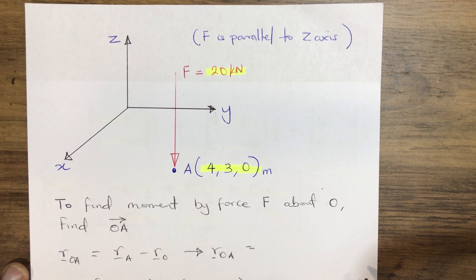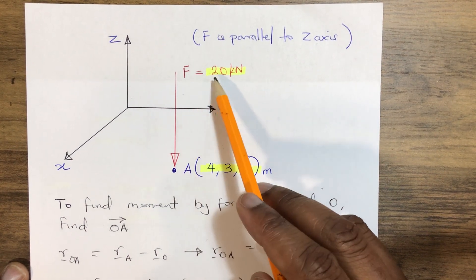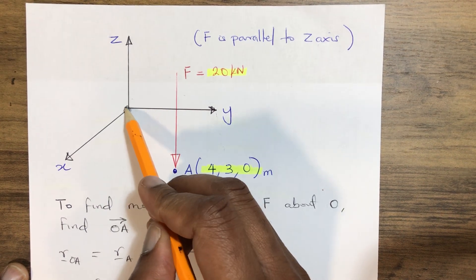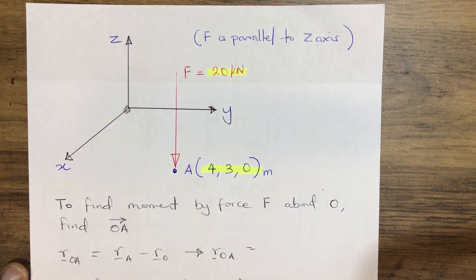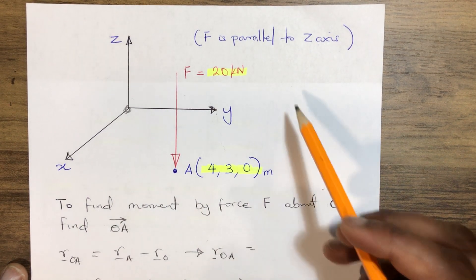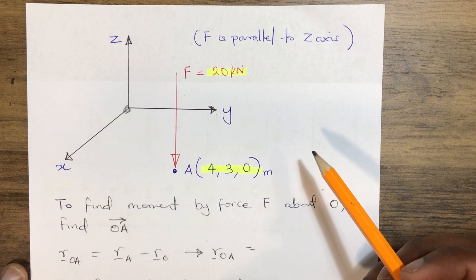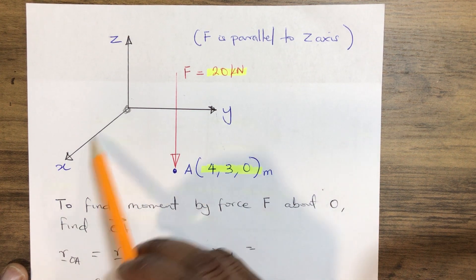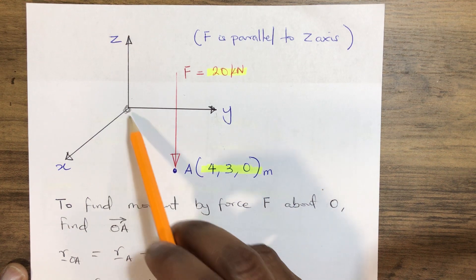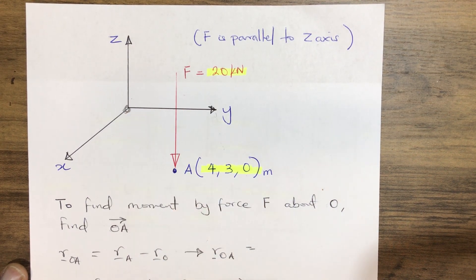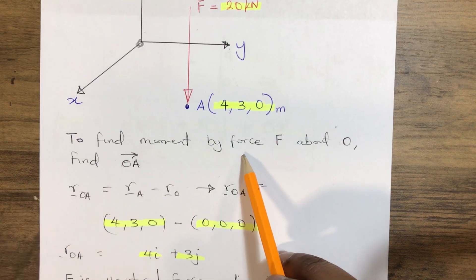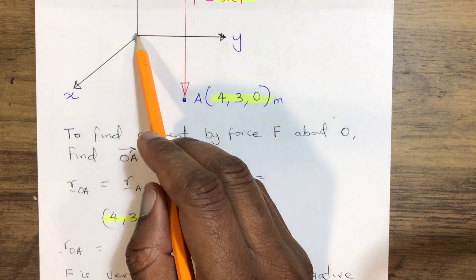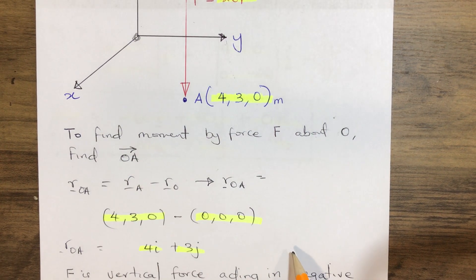We are asked to find the moment created by force F, which is 20 kilonewtons, about O — that is, the origin of the XYZ plane. The position of point A is: 4 on the X axis, 3 on the Y axis, and 0 on the Z axis. We need to find the moment of force F about O, the origin.